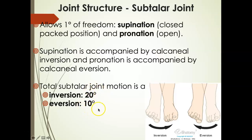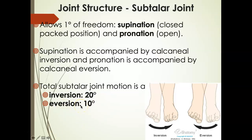Why does a person most often have two times more degrees of inversion than eversion? It's because the fibula extends further down on the lateral side than the tibia on the medial side. When we go into eversion, we get a block — and that block is the fibula. Whereas in an inversion moment, we're allowed to invert more because the tibia doesn't sit as low or as distal. These are normative values, and we will actually measure them with a goniometer.